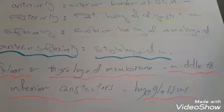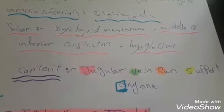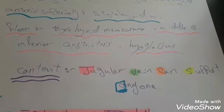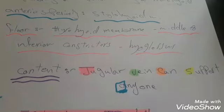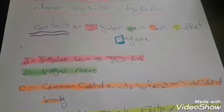About the content, there is a mnemonic to remember: jugular vein can't support anyone. J for jugular vein and jugulodigastric lymph nodes, V for vagus nerve, C for common carotid artery, its bifurcation, external and internal carotid arteries, and the carotid body and carotid sinus.